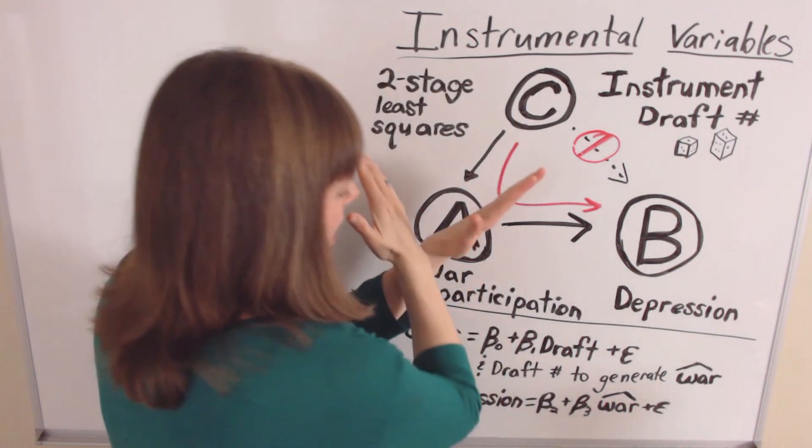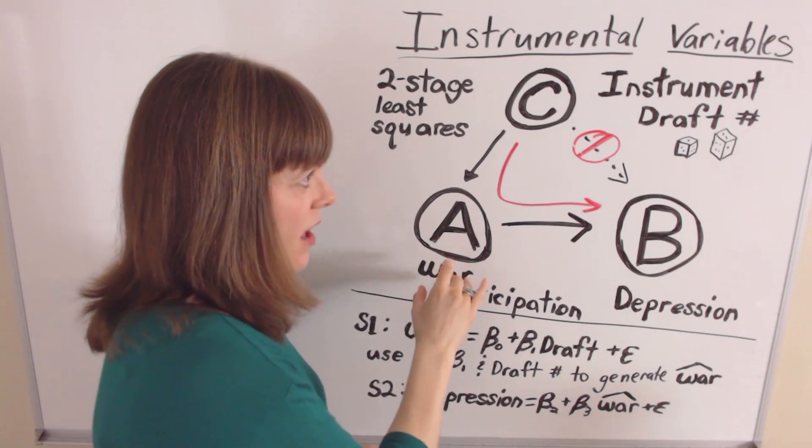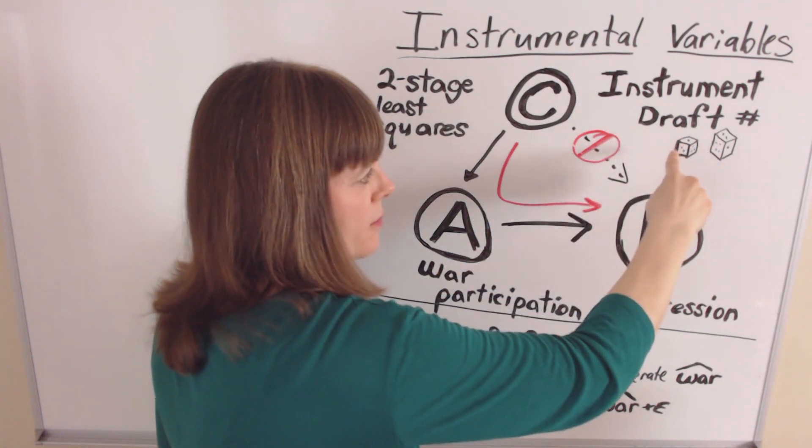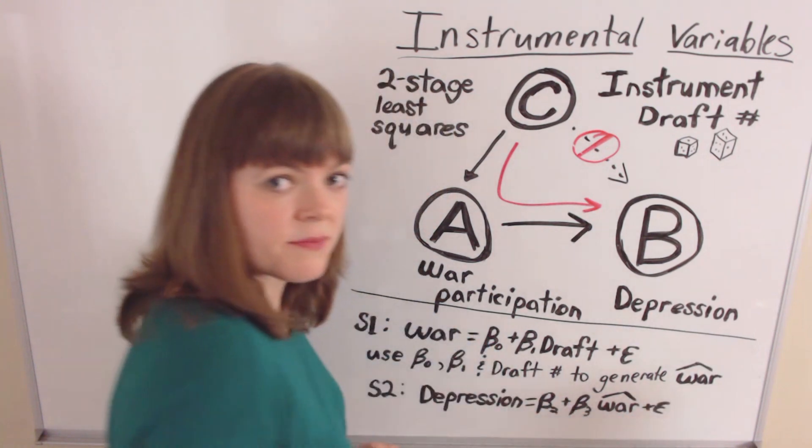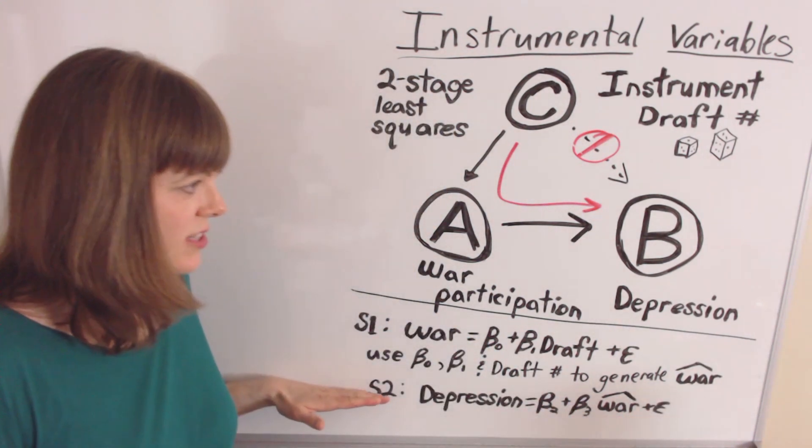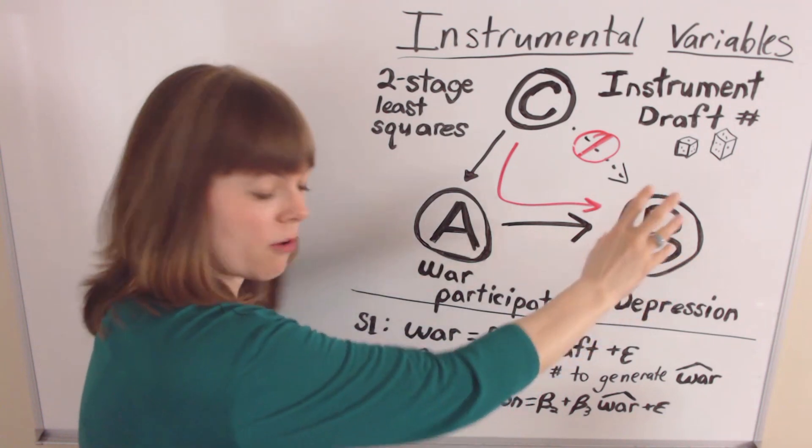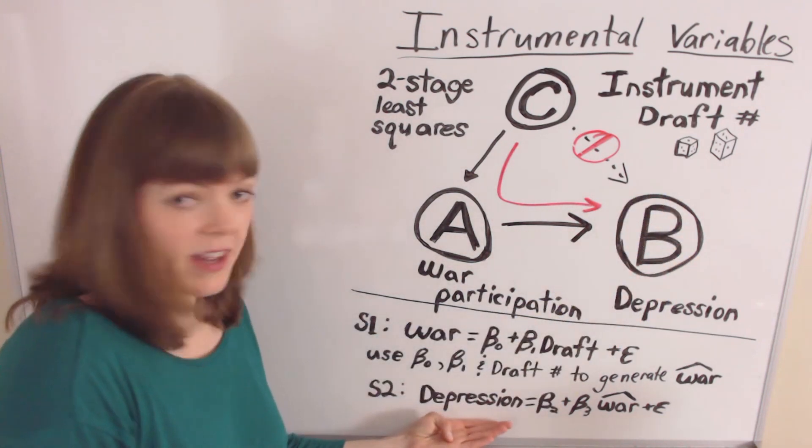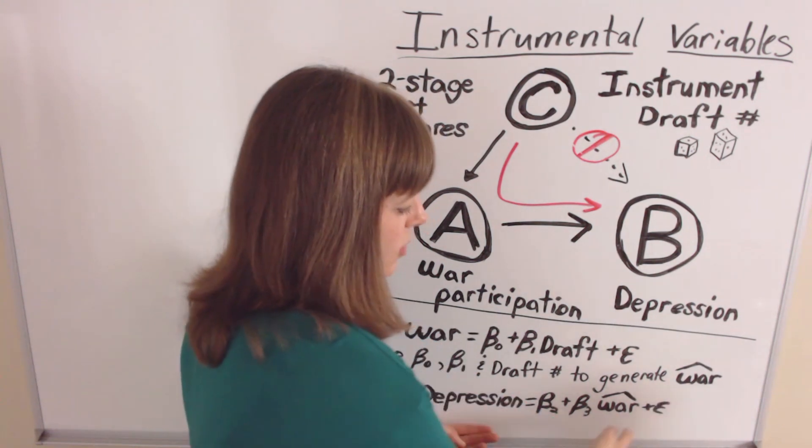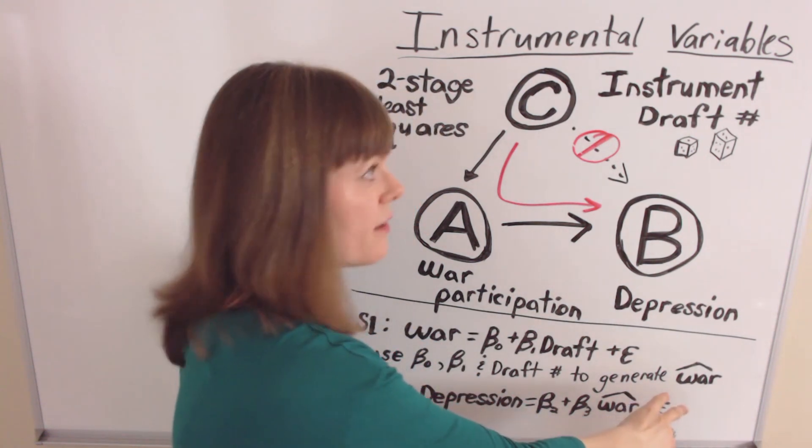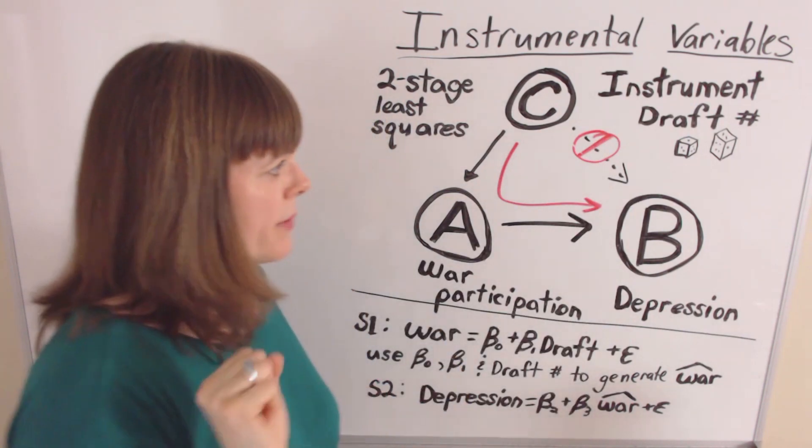And then our second stage of our two-stage least squares has depression, our dependent variable or our response variable on the left-hand side of the equation. And the right-hand side of the equation has war-hat. So it's the predicted probability of going to war based only on our instrument.